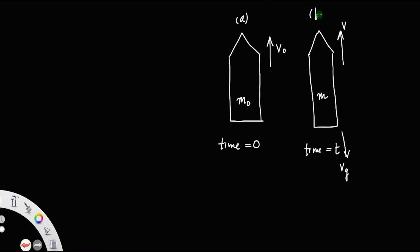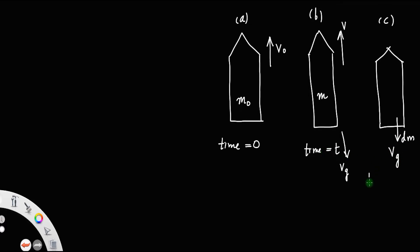Consider a third case C: after time t plus dt, some mass dm is ejected as gas through the nozzle at velocity vg. The remaining mass of the rocket will be m minus dm, and let the velocity of the rocket be v plus dv — meaning if some mass of the rocket is lost, it gains velocity dv.